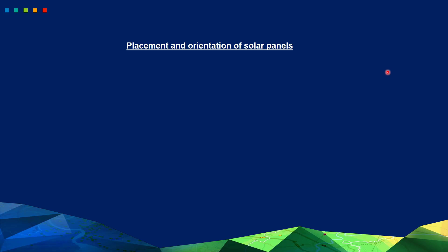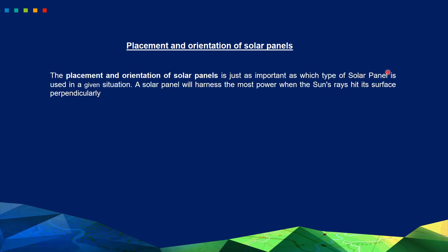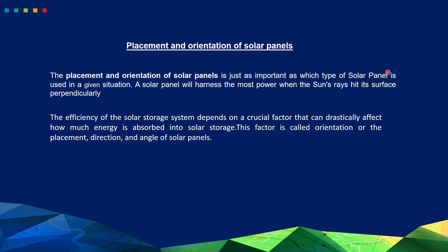Let's discuss what is the importance of having a proper placement and orientation of solar panels. The placement and orientation of a solar panel is just as important as which type of solar panel is used in a given situation. A solar panel will harness the most power when the sun rays hit its surface perpendicularly. The efficiency of the solar storage system depends on a crucial factor — orientation, meaning the placement direction and angle of solar panels.